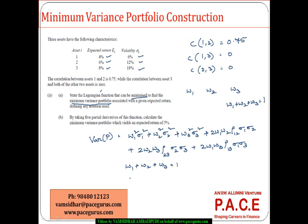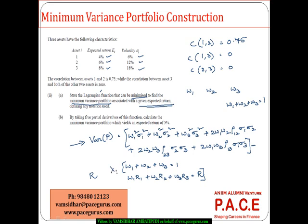Whatever is the expected return, if I am assuming I want a return of R, it means W1R1 plus W2R2 plus W3R3 equals R, because we are talking about a given expected return. So this is the objective — minimize the variance — subjected to these constraints. The way we build the Lagrangian function is: take what has to be minimized minus some lambda 1 times the return expression. This entire thing becomes my Lagrangian function.